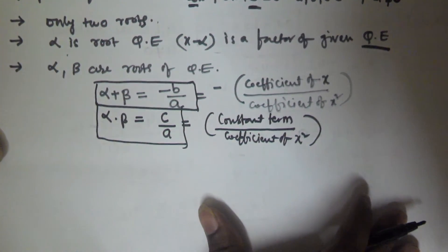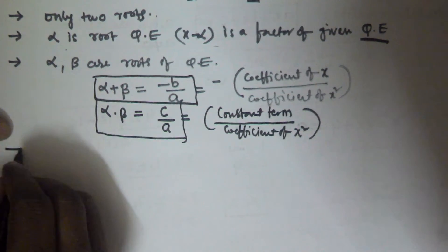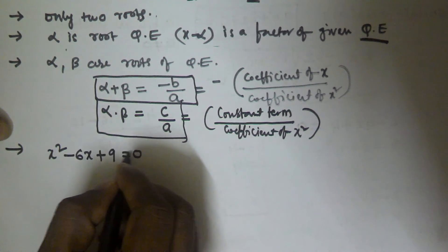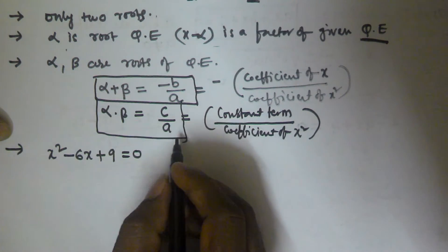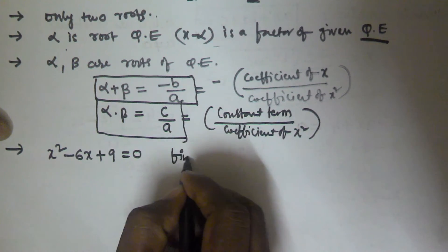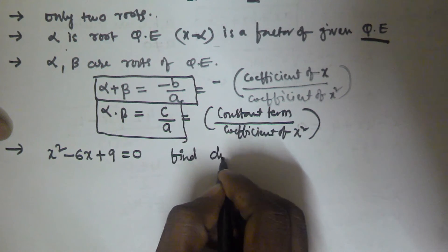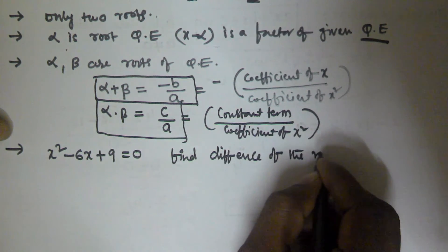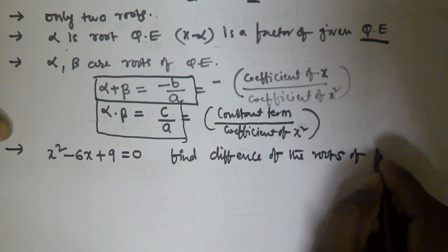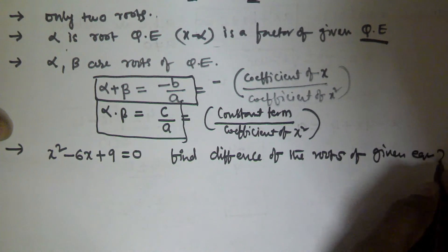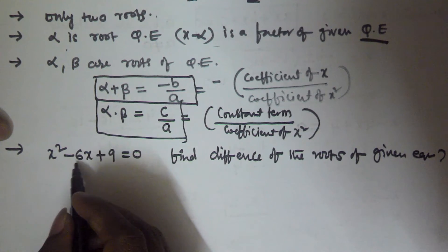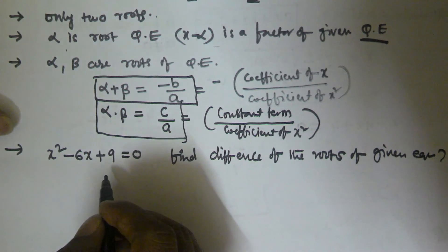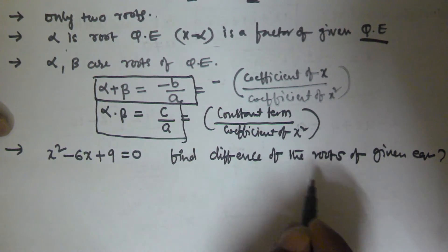Let us see one example based on these properties. We have the equation x² minus 6x plus 9 equal to 0. We need to find the difference of the roots of this equation.